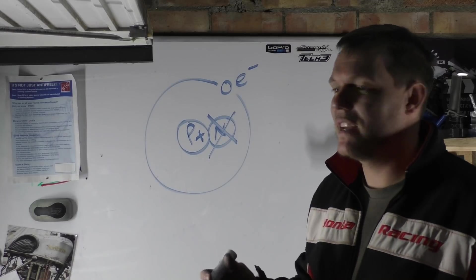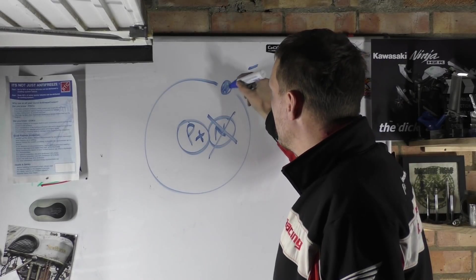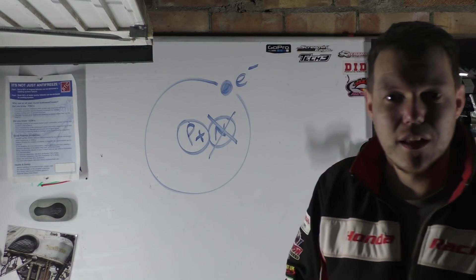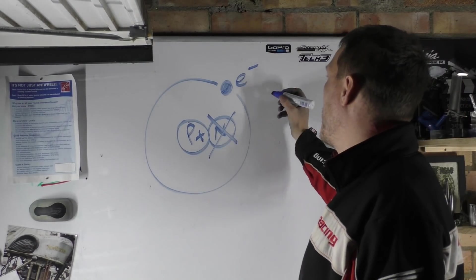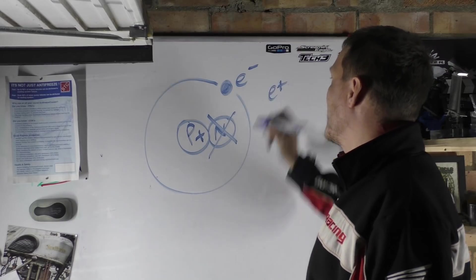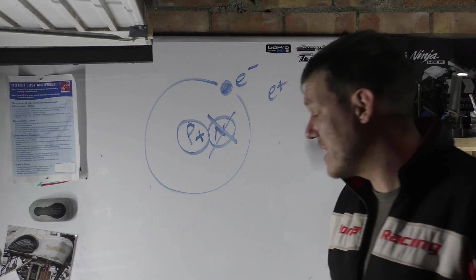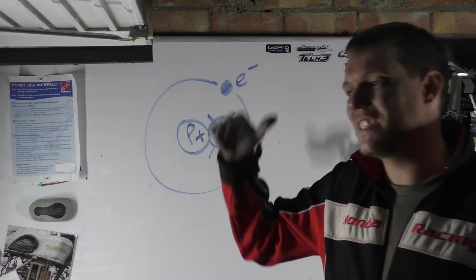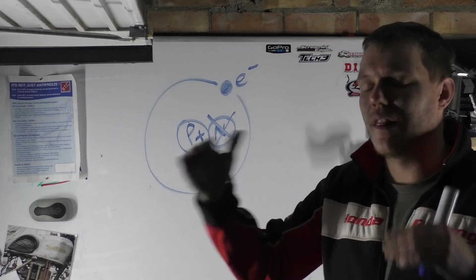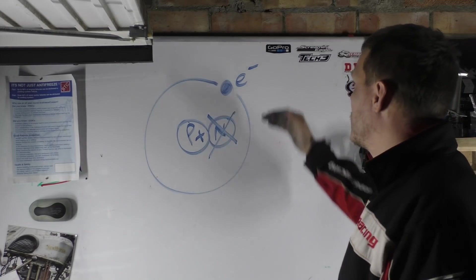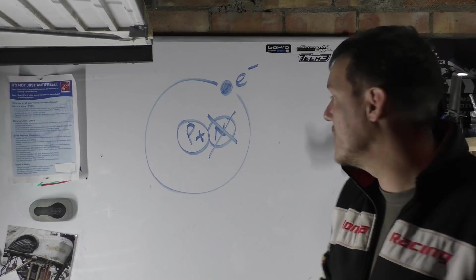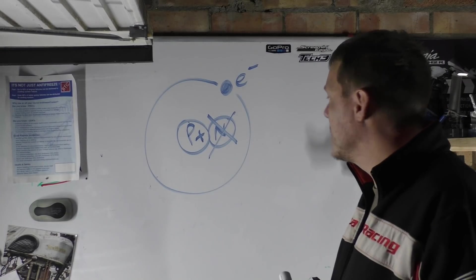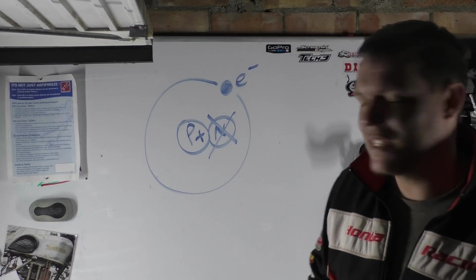Neutrons we don't need to worry about because they're neutral — they have no charge. What is charge? We don't really know; we just know there's an asymmetry. It's nothing to do with the actual elements themselves, because we have antimatter — we have positrons, which are electrons that are positively charged. What matters is like for like: negatives repel negatives, positives repel positives, and a negative and a positive attract.